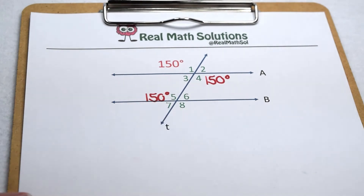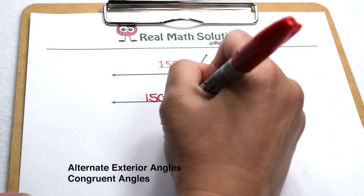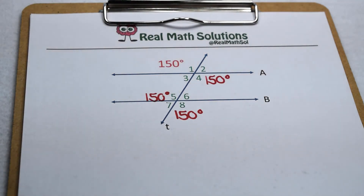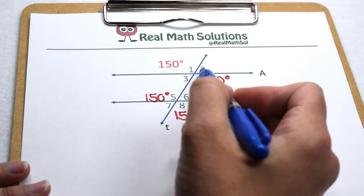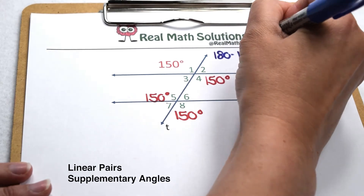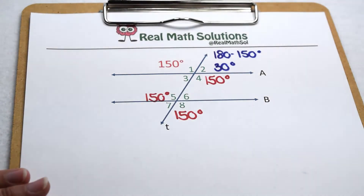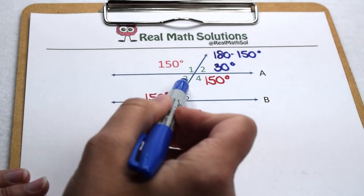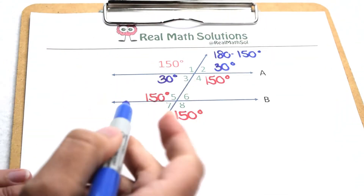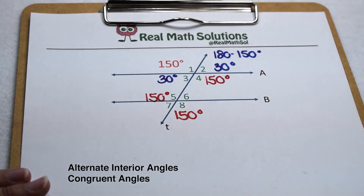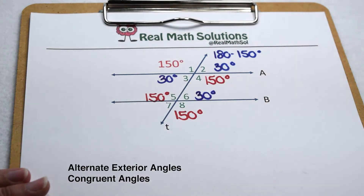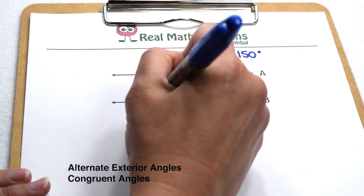Angle one and angle eight are alternate exterior angles, so angle eight is also 150 degrees. Coming back to angle one being supplementary to angle two, we do 180 minus 150 to get 30 degrees for angle two. Angle two and angle three are vertical angles, so angle three is 30 degrees. Angle three and angle six are alternate interior angles, so angle six is 30 degrees. Angle two and angle seven are alternate exterior angles, so angle seven is also 30 degrees.